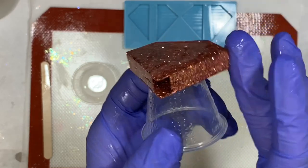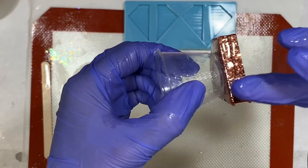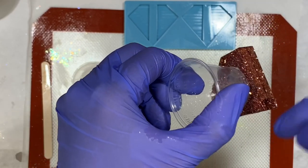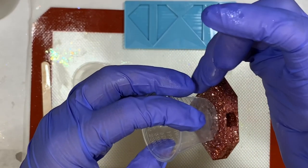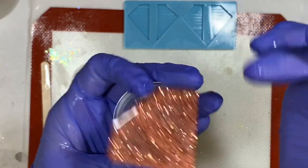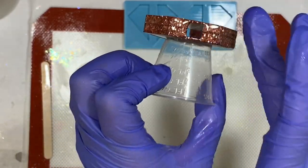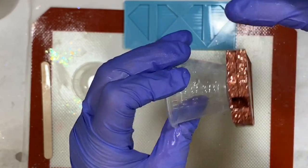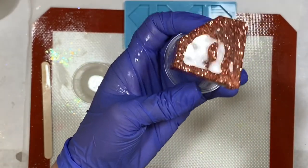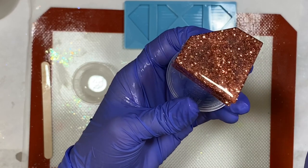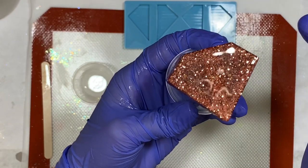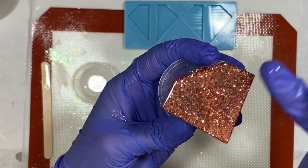I'm just going to go through with a gloved finger, make sure that everything's coated. You don't want to do a sopping wet coat to where it's dripping off the bottom, because that just causes extra steps for you to have to clean later. Just enough to get an even shine coat on the whole thing, and just see if I missed any spots.